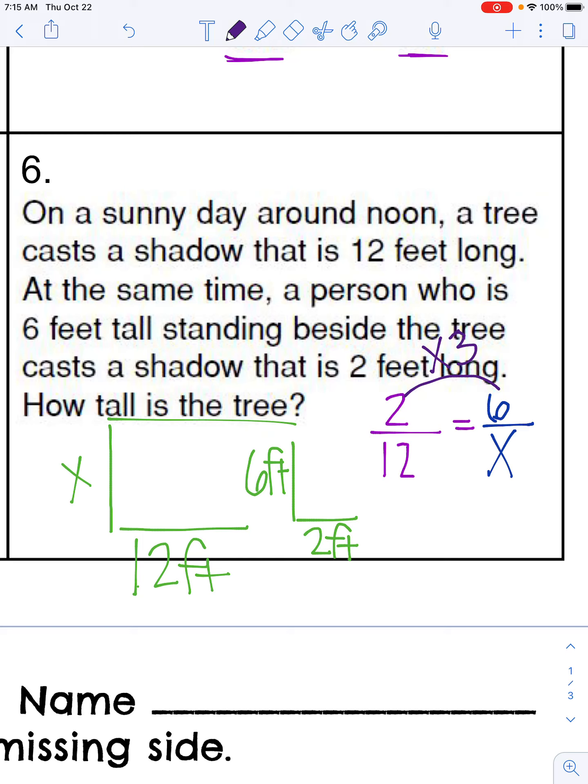So three is going to be our scale factor. So we can get from our 12 to our missing side length of how tall the tree is by multiplying by that scale factor of three. And when you multiply 12 times three, you should get 36. And that's 36 feet for how tall our tree is. So our X value should be 36 feet.